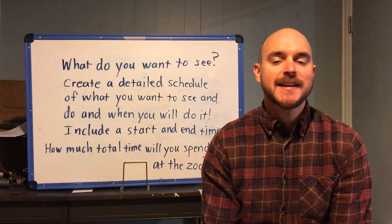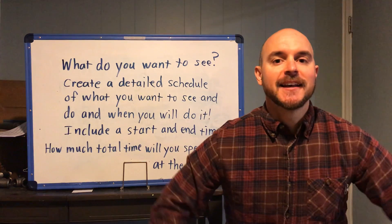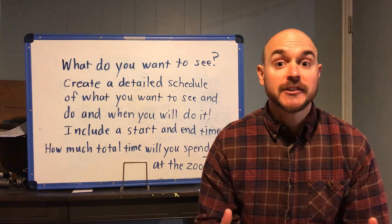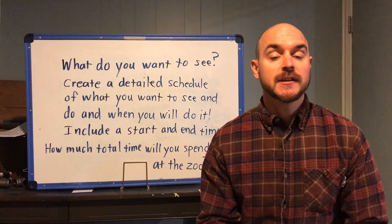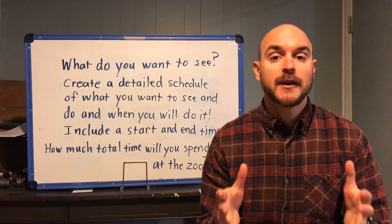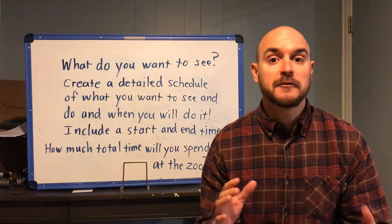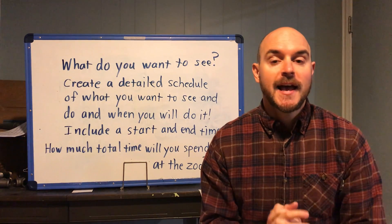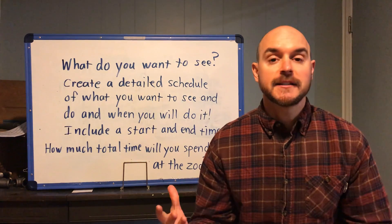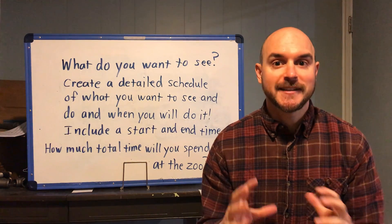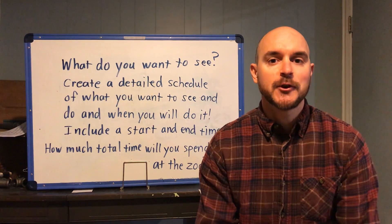Here we are for day three of our zoo trip planning. We have actually set ourselves up to be in a really good position for today's work. If you explored your website yesterday you got an idea of some of the special events or programs that might be happening, and in that it's possible that you have already seen a list of the animals and the types of things that are at the zoo or aquarium that you have chosen to visit.